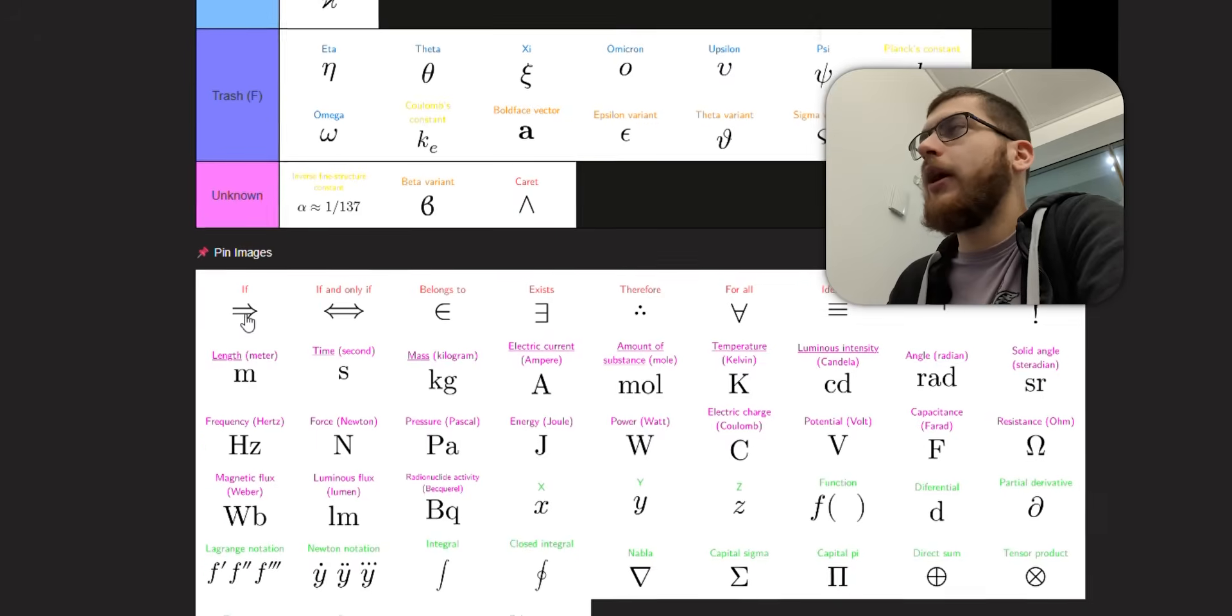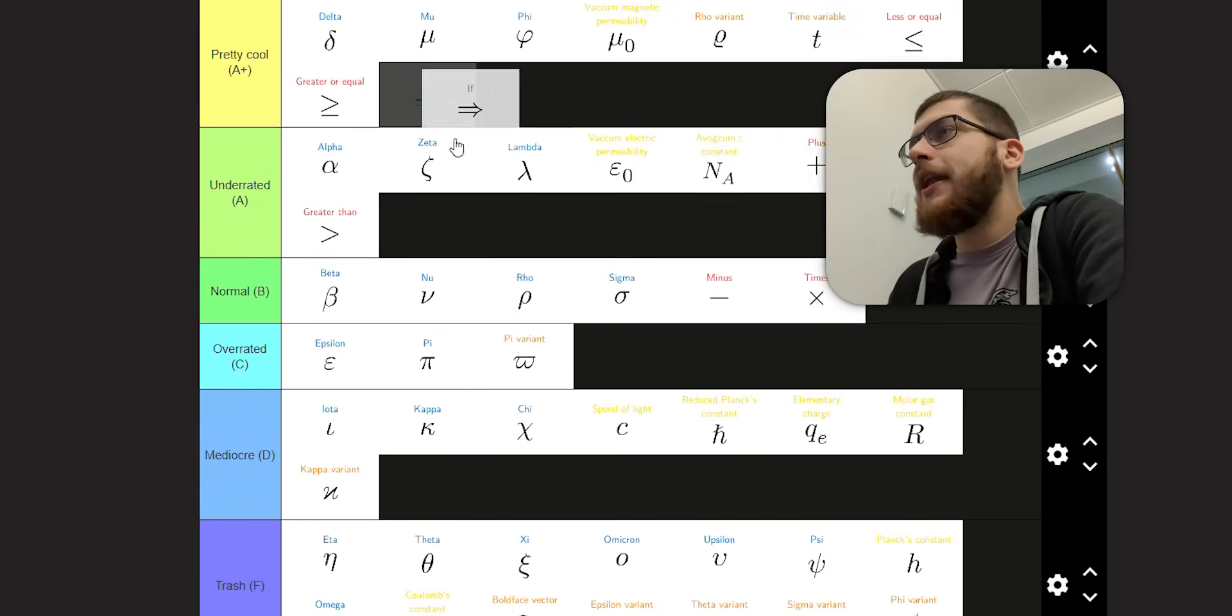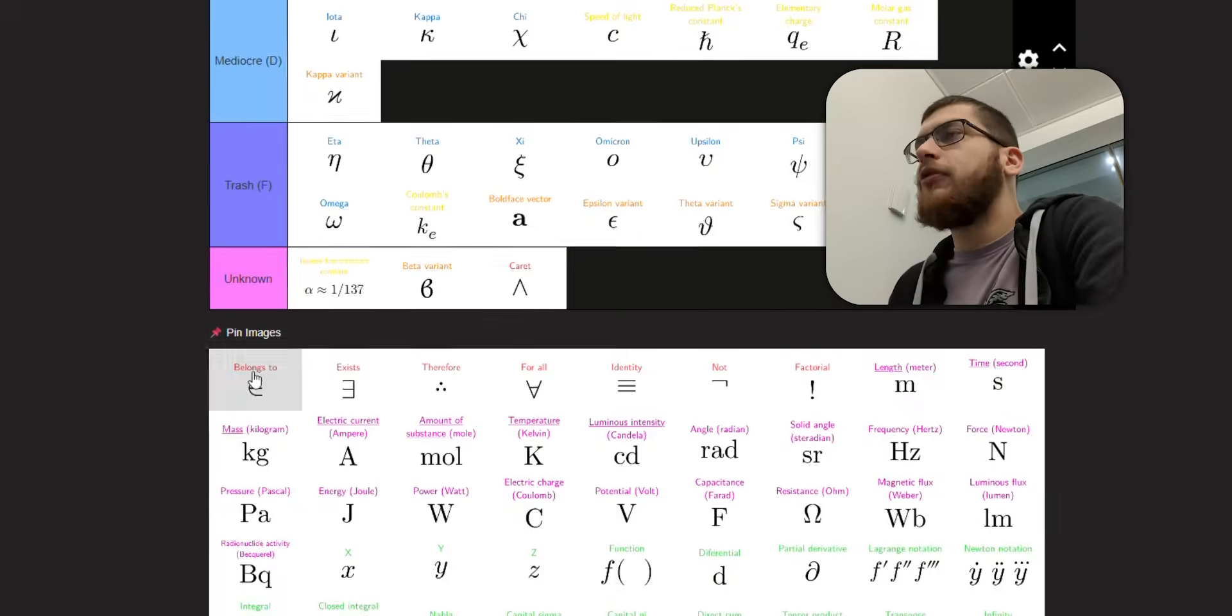Next, you've got caret. I don't know what caret is. Next, you've got if and if and only if. These make perfect sense to me. I love these symbols. And they're beautiful to write. I just love them.